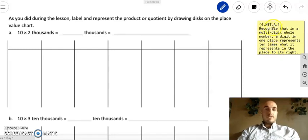So our standard is 4-NBT-A1. So you could look that up. And our objective is that we're going to recognize that a multi-digit whole number, a digit in one place, represents 10 times what it represents in the place to its right. So this is what I have planned for us to learn today and the next couple days. There's going to be times where we spend maybe just one or two days on one of these standards and objectives. There's going to be times where we spend upwards of even a week on these, depending on how many parts to it and how long the objective is.